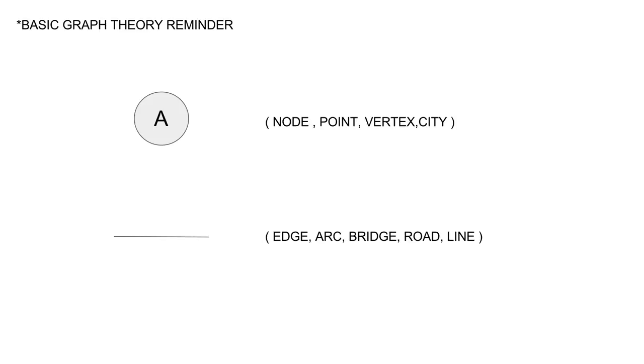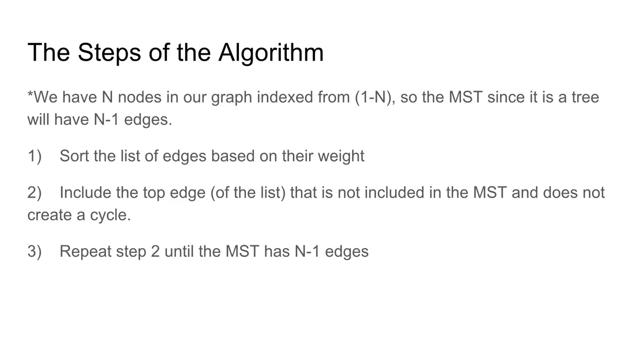Some basic graph theory just for you to remember: a circle with a letter or number inside is named a node, or the other names you can see on the right - point, vertex, city, whatever. And the line is called an edge. An edge connects two cities, two nodes.